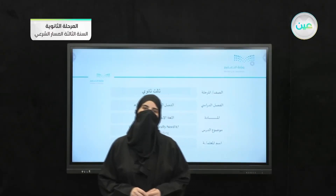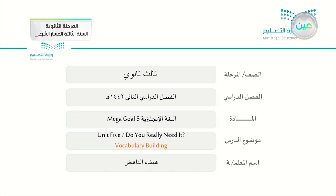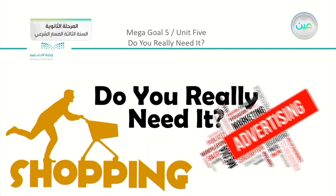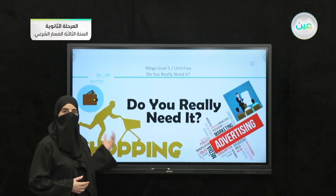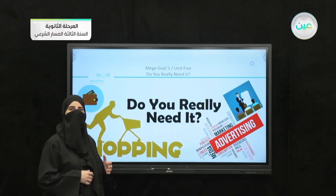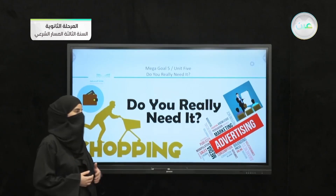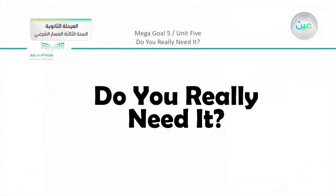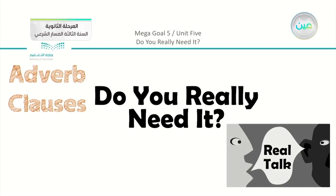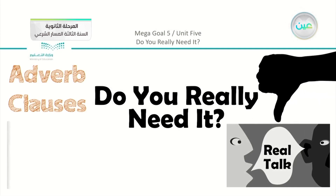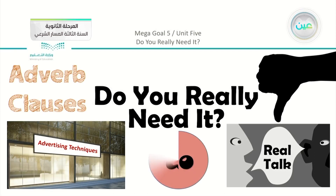Hello students. We are going to complete our week with Unit 5, titled 'Do You Really Need It?' Within the unit we talked about different topics concerning advertisement and shopping. We covered advising against something, pronunciation, adverb clauses, real talk, different types of phrases, and pronunciation.